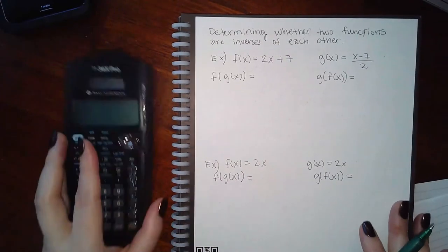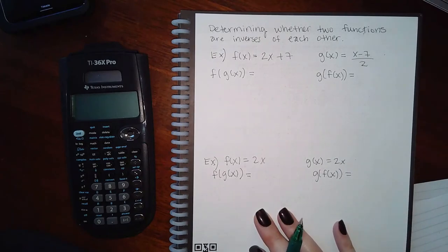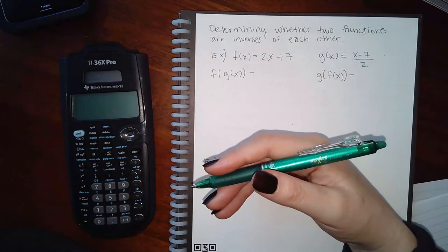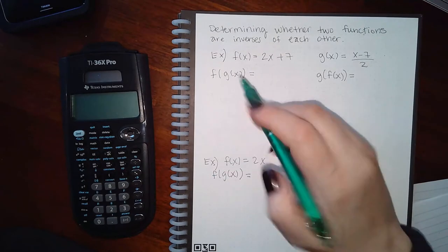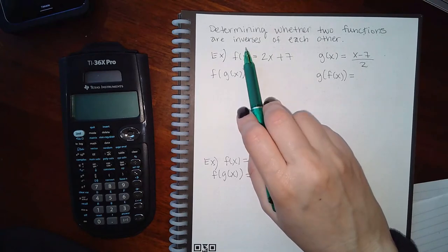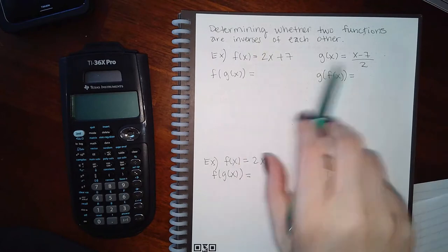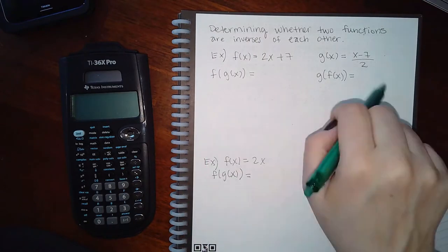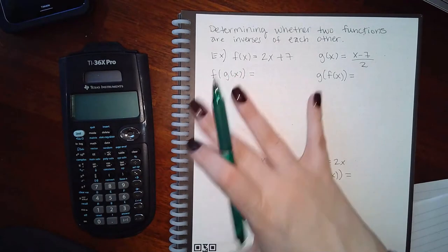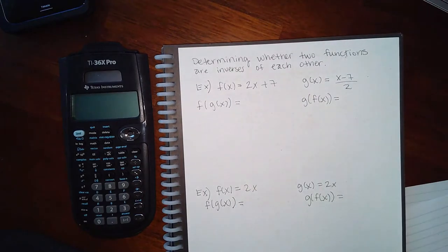Now, this problem says determine whether two functions are inverses of each other. The purpose of finding out whether something is one-to-one is because an inverse can only exist for one-to-one functions — if a function is not one-to-one, it does not have an inverse. Since the problem asks about inverses, I assume these functions are one-to-one. How do you know if two functions are inverses of one another?